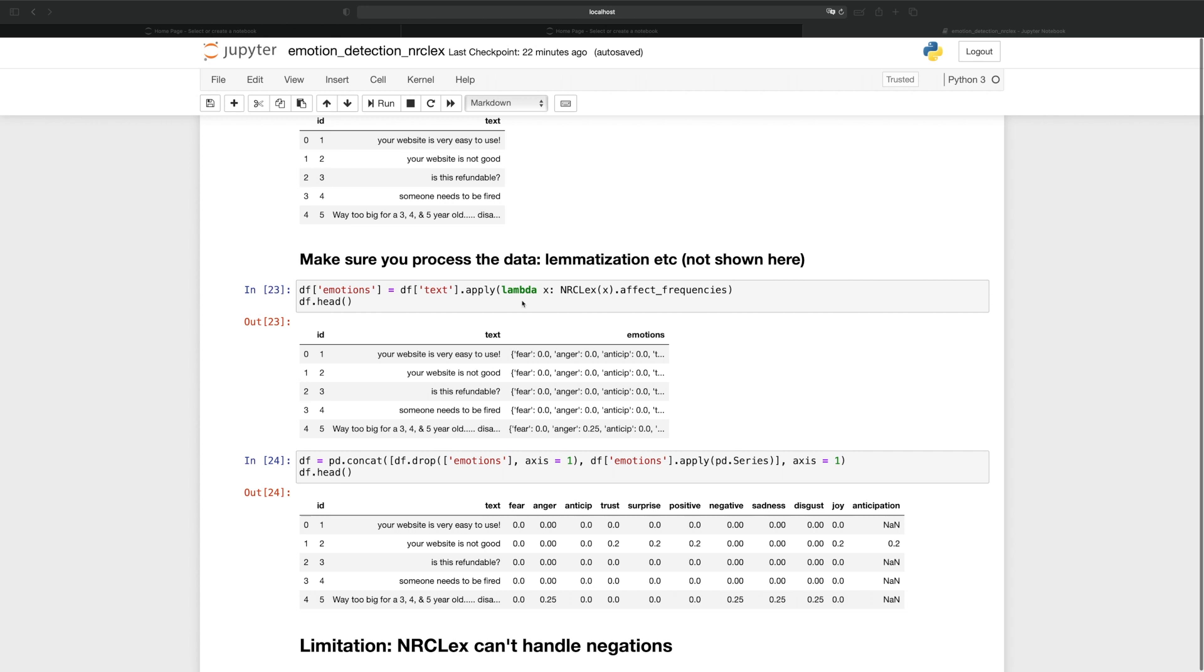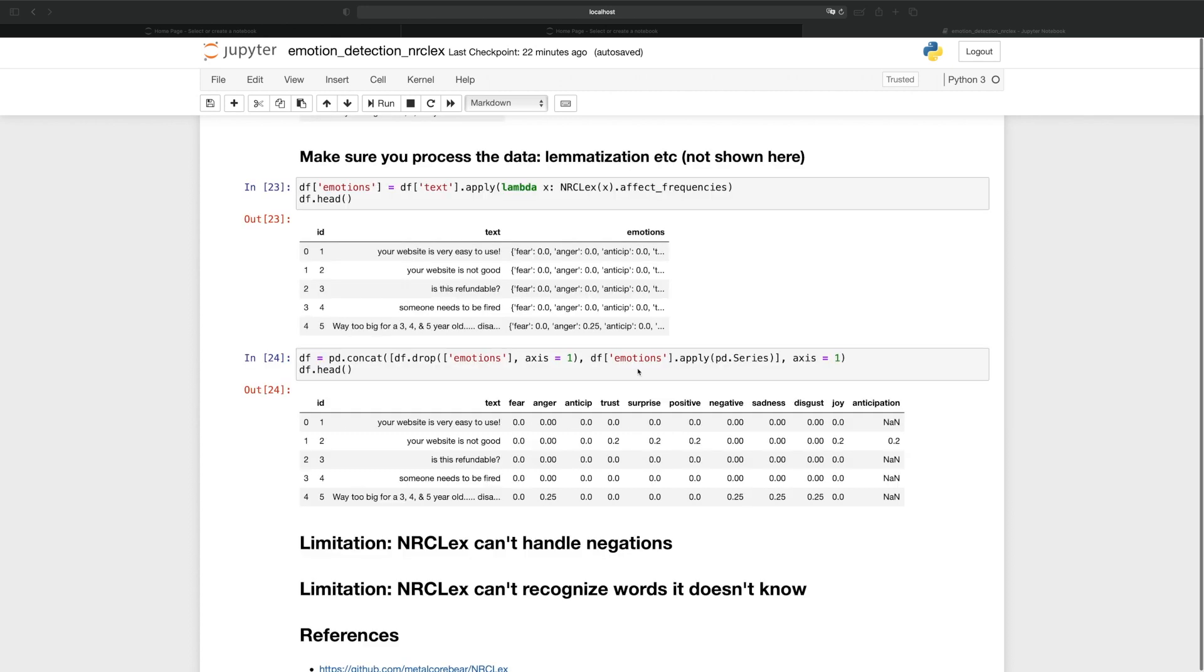And finally, in the next section, we will turn this dictionary into columns up here. We have these emotion vectors, and we can use them as predictors when we build an emotion model.